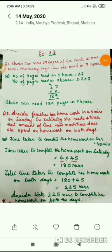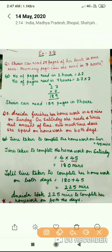Now children, let us do some story problems given in Exercise 3G of your book. First question is: Sheeran can read 27 pages of her book in one hour. How many pages can she read in 7 hours?